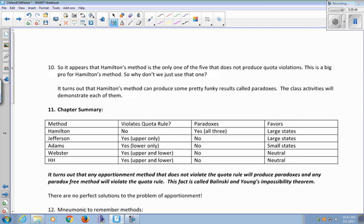So it appears that of the five methods we've studied, Hamilton's method is the only one that does not ever produce quota violations. This is a big pro for Hamilton's method, so why don't we use that one? Why did we go with Huntington Hill? So it turns out that Hamilton's method can produce some pretty funky results called paradoxes.